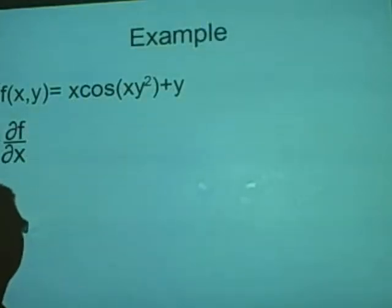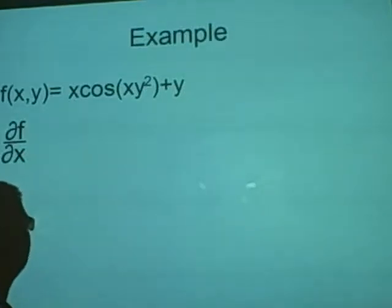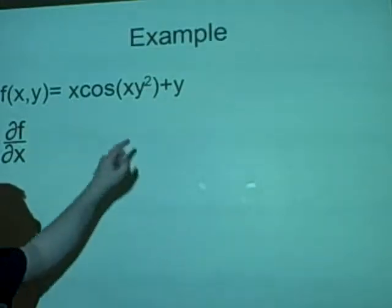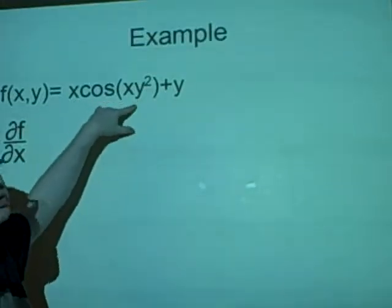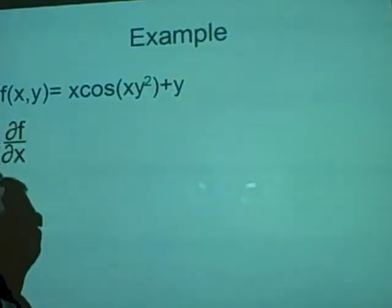So we're going to differentiate all the x parts, but pretend that everything else, so in this case the y's, are just constants. So as we can see we have a function of x times another function of x, plus what is a constant.